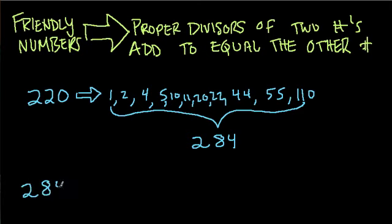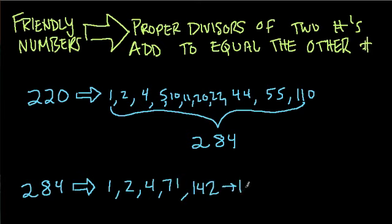Well, 284 is friendly to 220 because the proper factors of 284, if we find all of them and add those up, we will get 220. So the proper factors are 1, 2, 4, 71, 142. If you add all those up, if you took 1 plus 2 plus 4 plus 71 plus 142, we get 220.